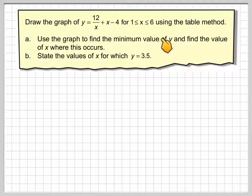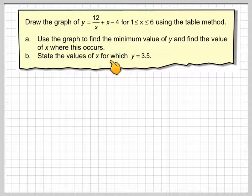Use the graph to find the minimum value of y and find the value of x where this occurs. Then state the values of x for which y = 3.5.